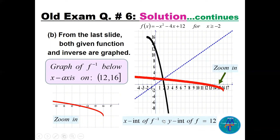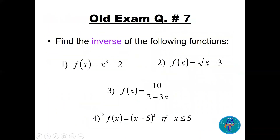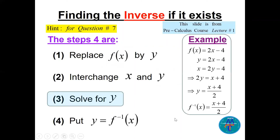Question number seven: find the inverse of four functions — a cubic, a square root, a rational, and a parabola with a condition. As a reminder, the four steps are: replace f(x) by y, interchange x and y, solve for y, then write f⁻¹(x) = y.